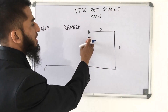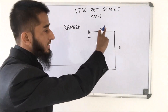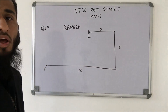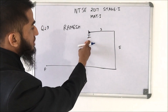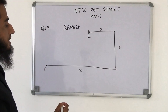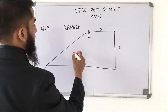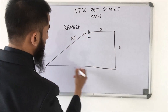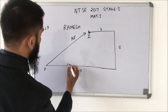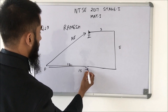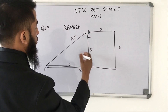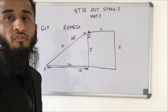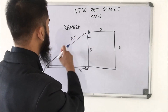This question says Ramesh starts at an initial position, then traverses 3 km east, turns right and traverses 5 km, then right again and traverses 15 km. The direction from final to initial position is northeast. The east-west difference is 15 − 3 = 12 km, and the north-south difference is 5 km. Applying the Pythagorean theorem: √(12² + 5²) = 13 km. So the initial position is 13 km northeast of the final position.